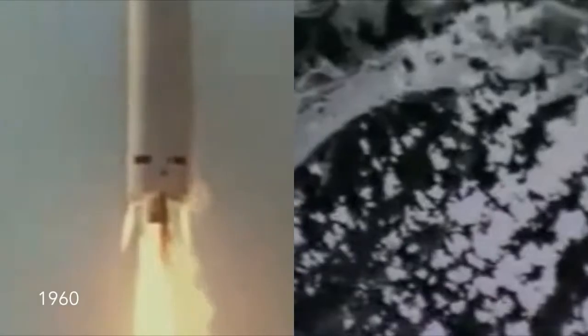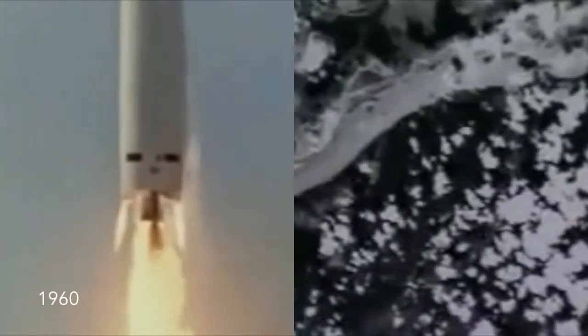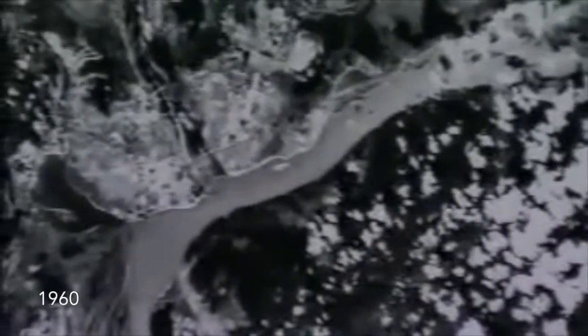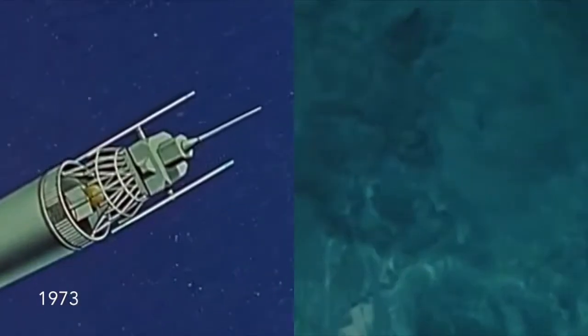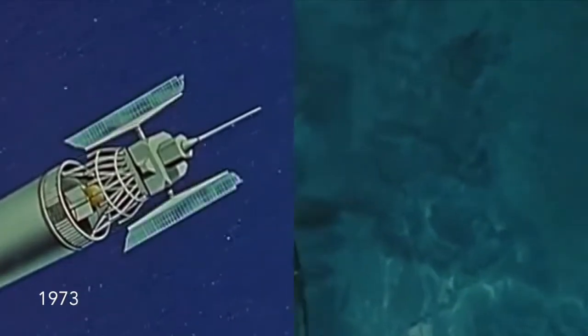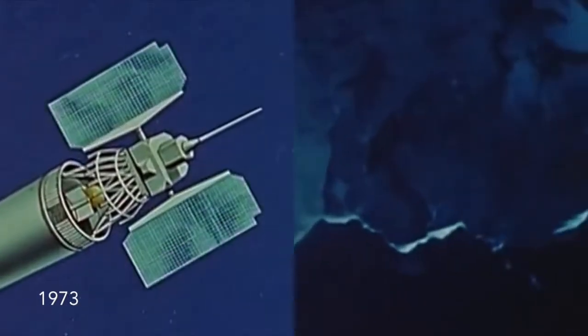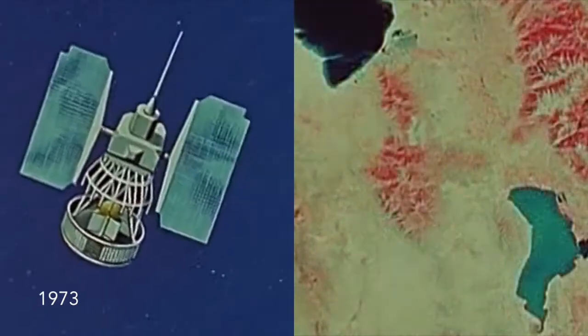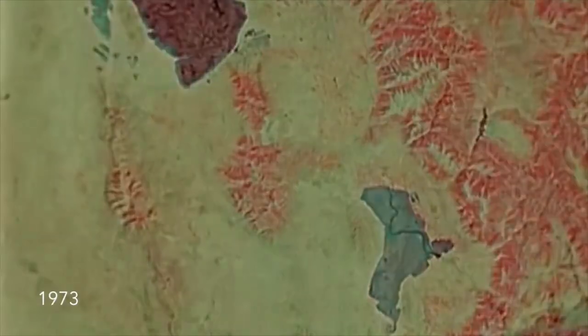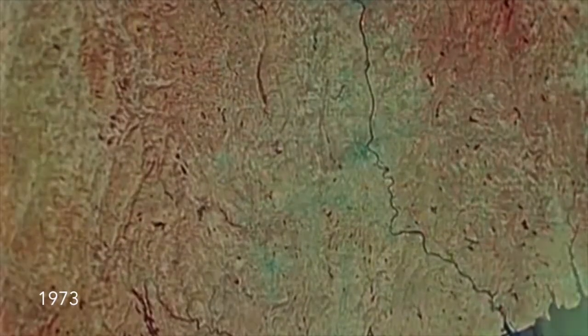Not long ago, we had no way to look down at our planet. But at the beginning of the Cold War, the first military imaging satellite took a photo of Earth. Then in the 70s, NASA launched Landsat 1, a commercial imaging satellite. And all of a sudden, we were able to see our planet from above.